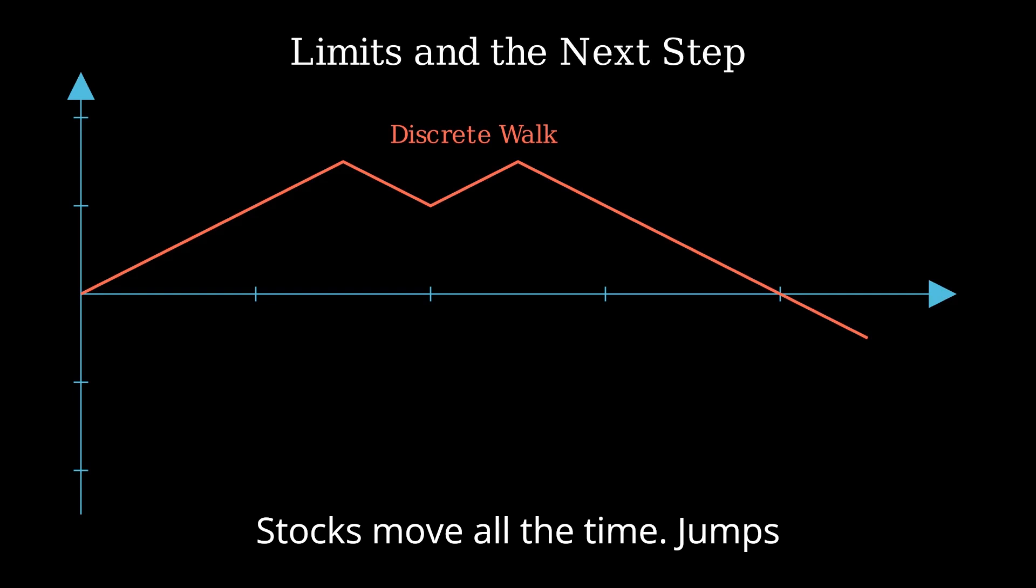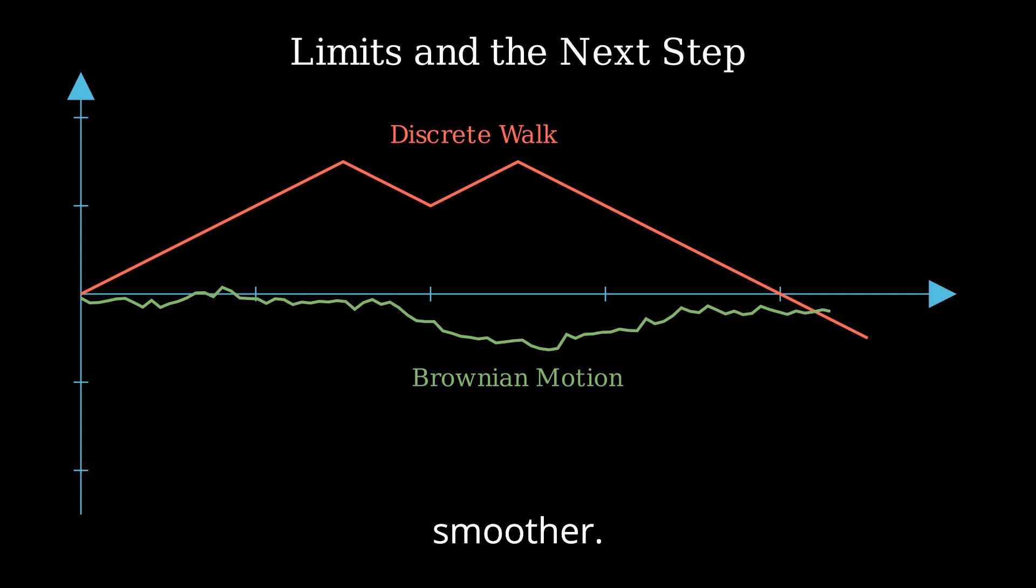Stocks move all the time; jumps vary, big or small. Brownian motion fixes this. Steps shrink to tiny values, and chaos gets smoother.